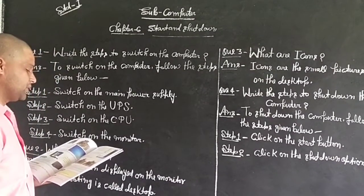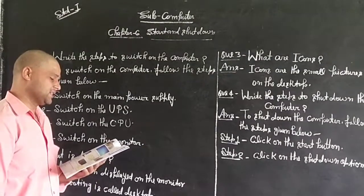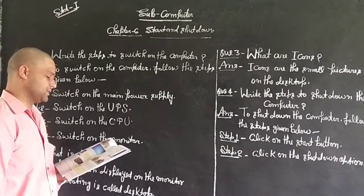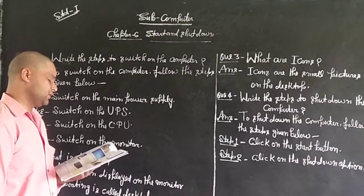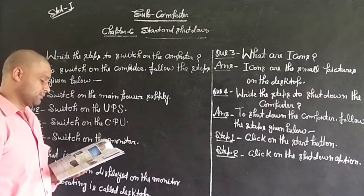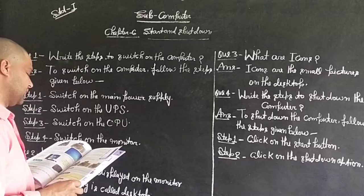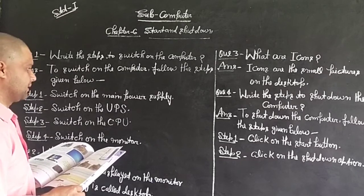You must make the computer shut down completely before it gets turned off. Follow steps: switch off the UPS, step 2 switch off the monitor, and step 3 switch off the main power supply button.